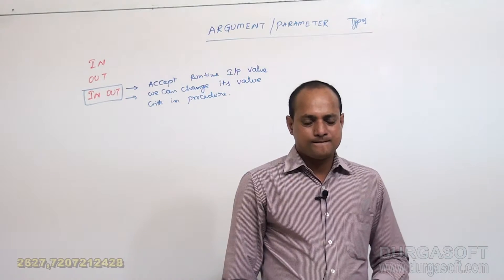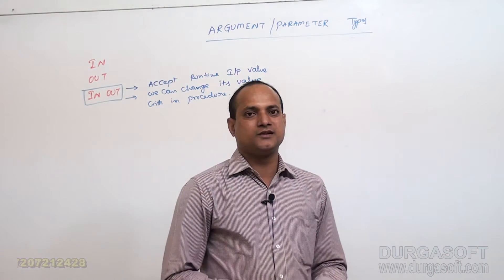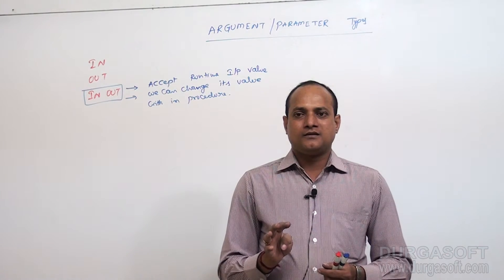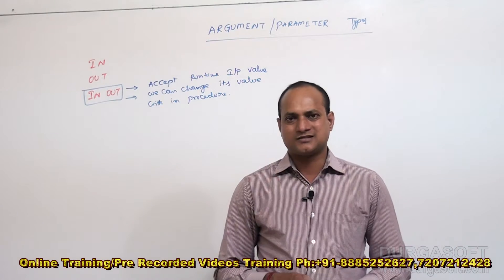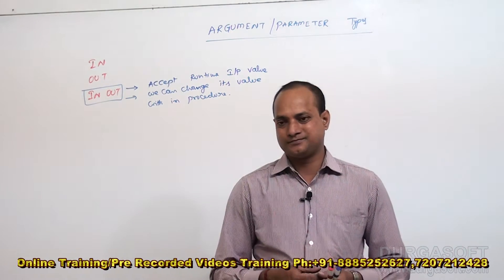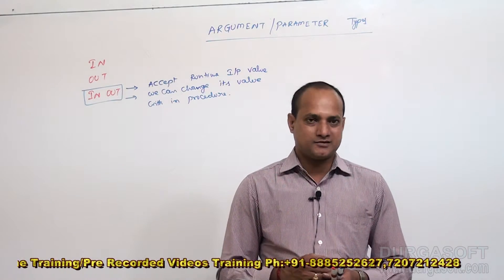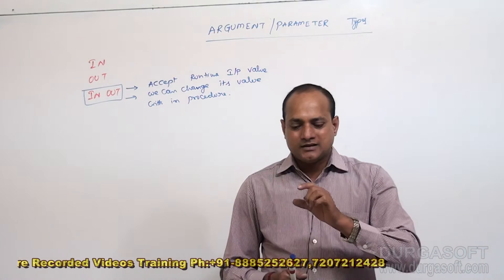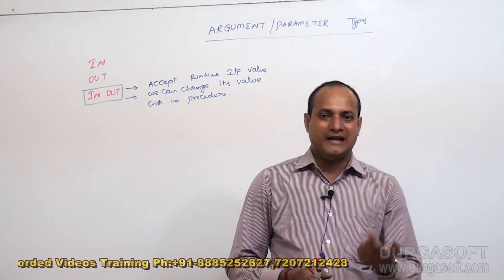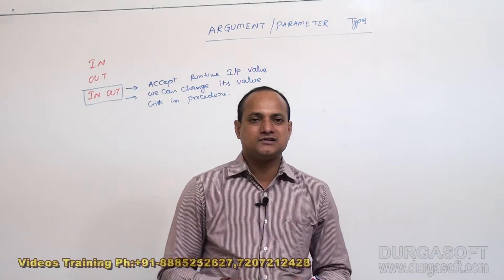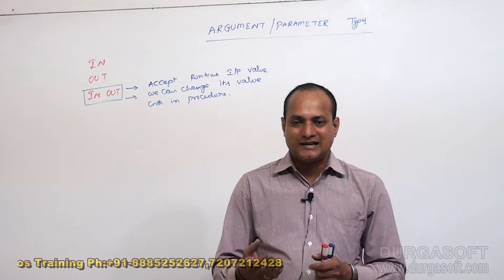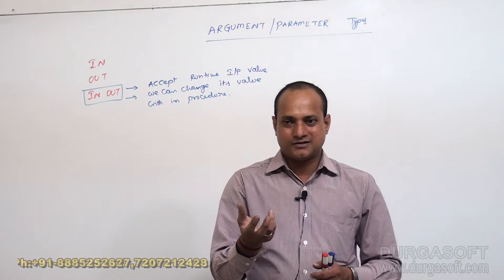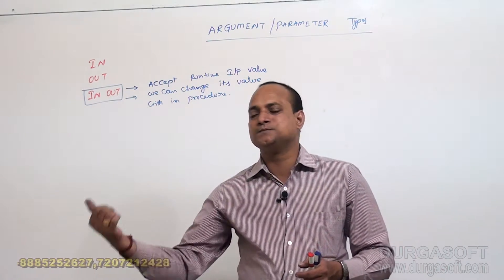Let me consider one example. I am considering a procedure that takes a customer ID — or otherwise, customer account number — and also takes some amount. The responsibility of the procedure is to take the account number and amount, and update the old balance by adding the given amount. Then you have a new balance in your account, and that new balance amount I want to return to the program.